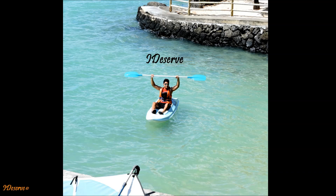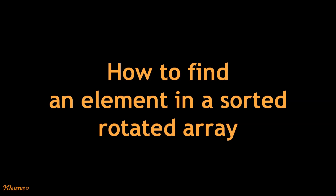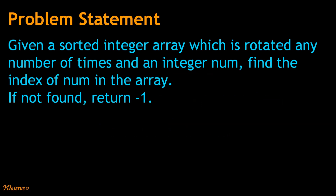Hello friends, I am Saurabh. Let's have a look at another interesting problem today which is how to find an element in a sorted rotated array. The problem statement is: given a sorted integer array which is rotated any number of times and an integer number, we have to find the index of that number in the array. If not found, we have to return –1.